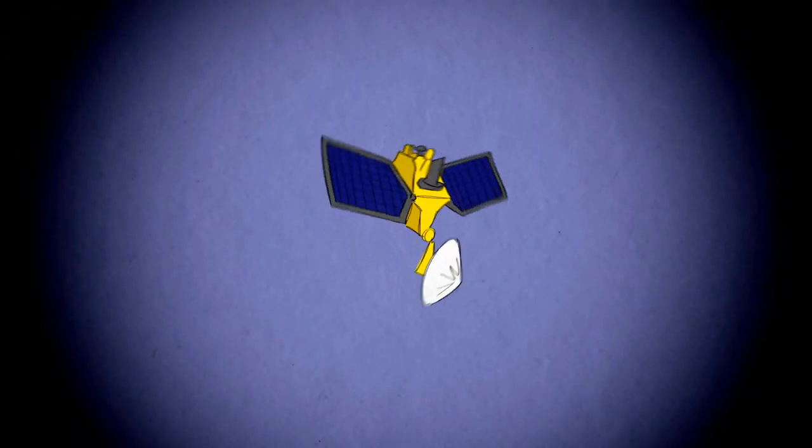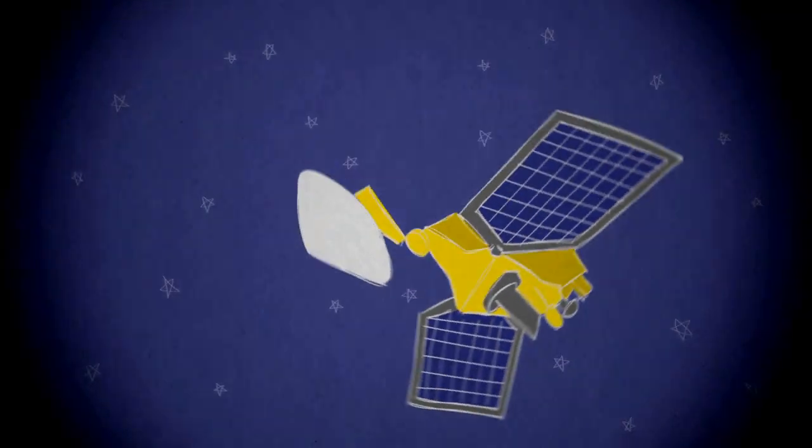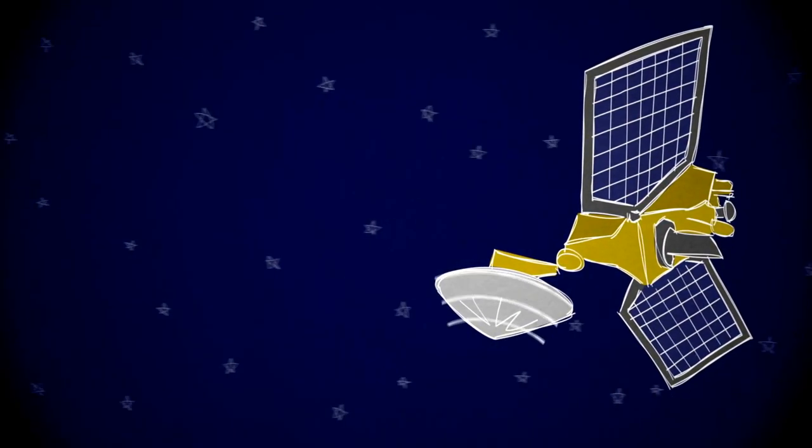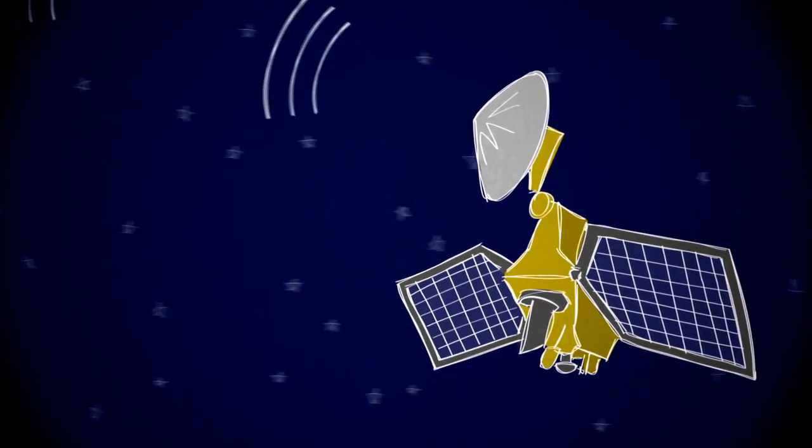So the Mars Reconnaissance orbiter plays the role of backup. It will also fly overhead to capture what happens and then store the landing data it collects on board for playback to Earth a few hours later.